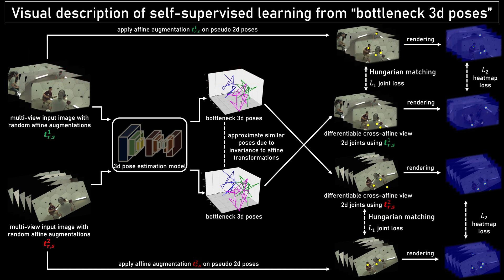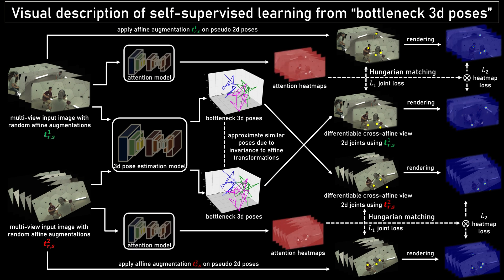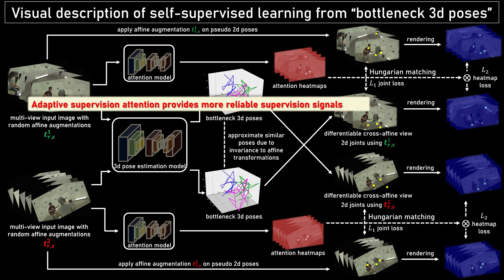Furthermore, to alleviate the intrinsic inaccuracy of the pseudo-labels, we propose an adaptive supervision attention mechanism to guide self-supervision. Specifically, we apply a lighter backbone to extract the attention heat map and then use the element-wise product to compute the weighted losses.